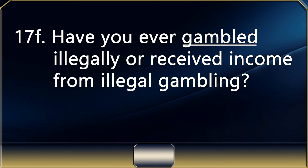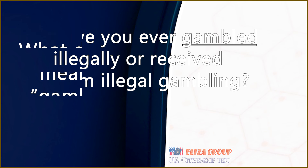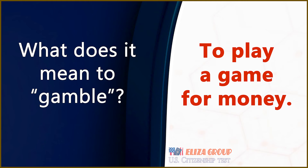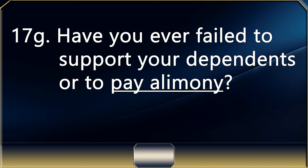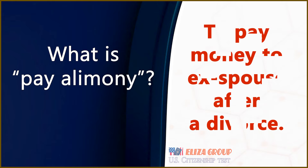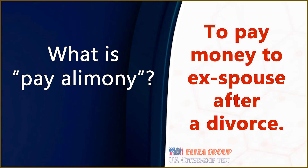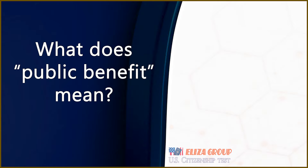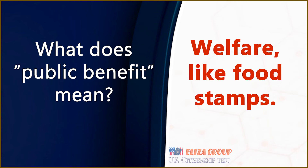Have you ever gambled illegally or received income from illegal gambling? No. What does it mean to gamble? To play a game for money. Have you ever failed to support your dependents or to pay alimony? No. What is pay alimony? To pay money to an ex-spouse after a divorce. Have you ever made any misrepresentation to obtain any public benefit in the United States? No. What does public benefit mean? Welfare, like food stamps.